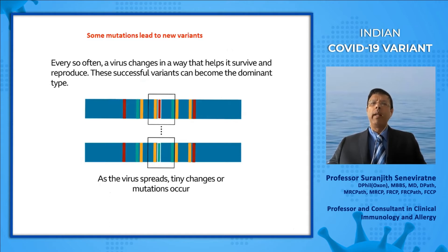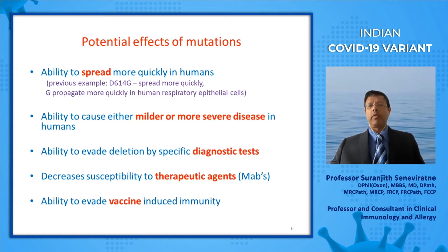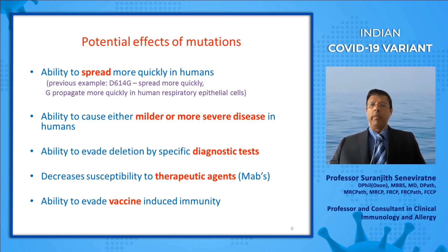As the virus multiplies, certain changes occur — mutations in the gene. Some of the changes are of no effect; some are disadvantageous to the virus; but some of the changes are important as they cause the spread of the virus and other effects. These effects include: changes in the genes of the virus can increase the ability to spread, can cause milder or more severe disease, can affect diagnostic tests, can affect treatment, and most importantly, can evade vaccine-induced immunity. These are the effects of the different variants of SARS-CoV-2.